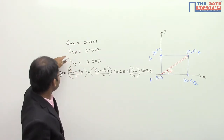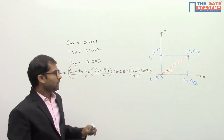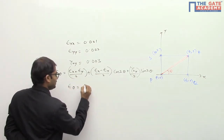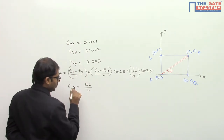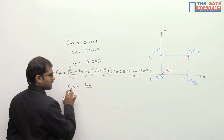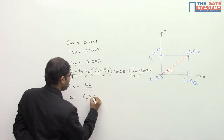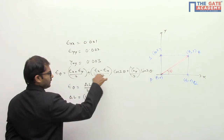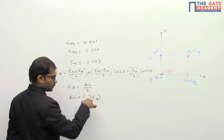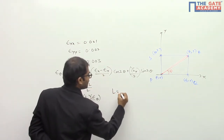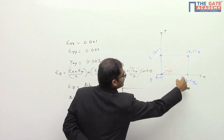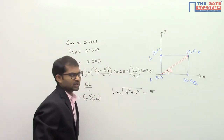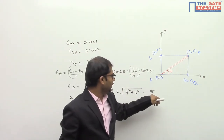We put in the values of epsilon_x, epsilon_y, and gamma_xy to obtain epsilon_theta. Now, epsilon_theta is actually the change in length divided by original length, i.e., delta_l / l. So after getting epsilon_theta, we multiply by the original length l to get delta_l. The length l of the diagonal is given by the square root of (4² + 3²), which is the square root of 25, equal to 5 — so the diagonal length is 5 units.